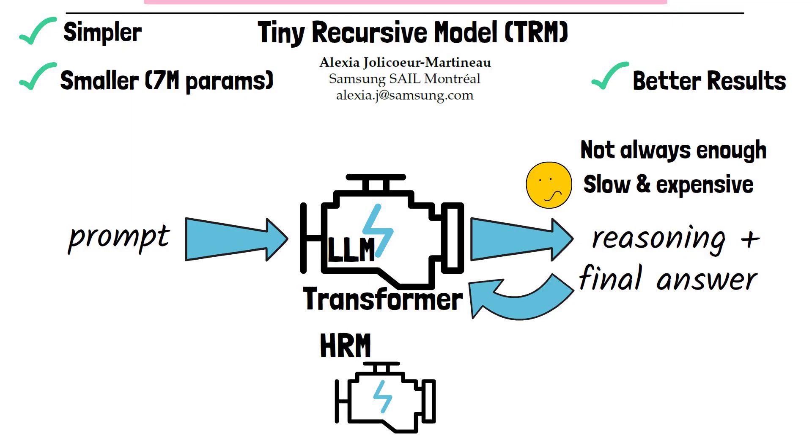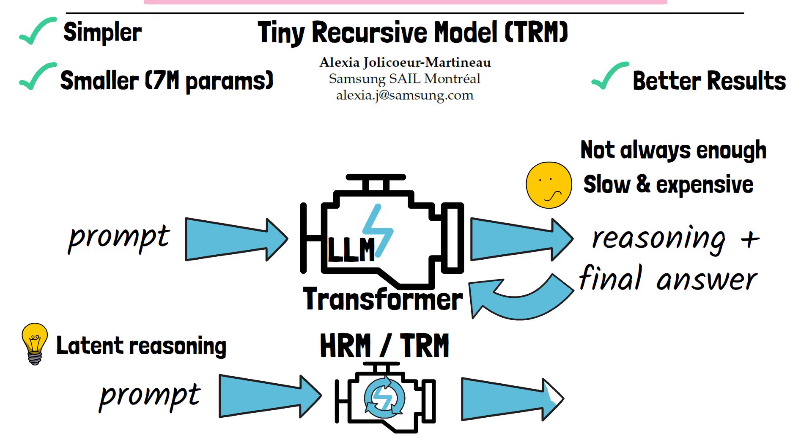Instead, the Hierarchical Reasoning Model and Tiny Recursive Model take a different approach based on latent reasoning. Given a prompt, the model performs its entire reasoning process internally and outputs only the final answer without the reasoning traces. While this sounds like a standard RNN, we'll see how it's different when diving deeper into the architecture.